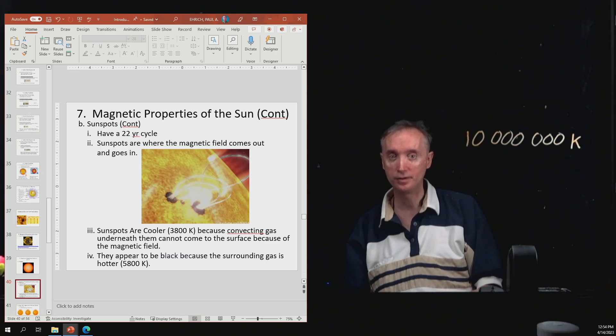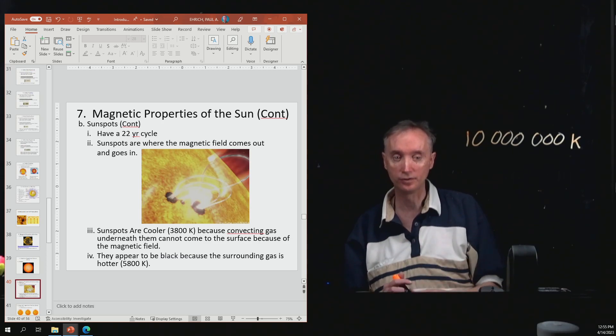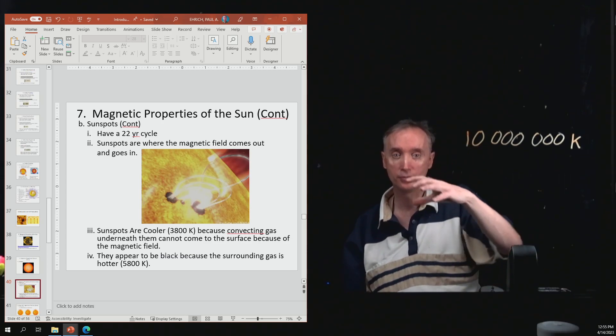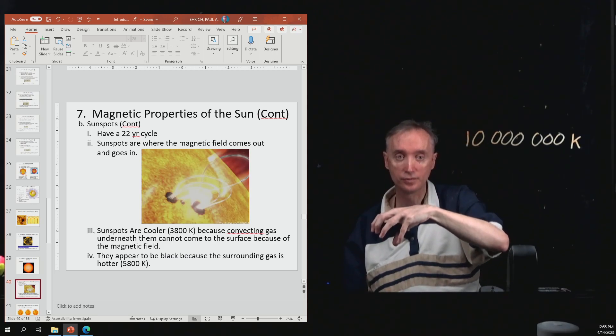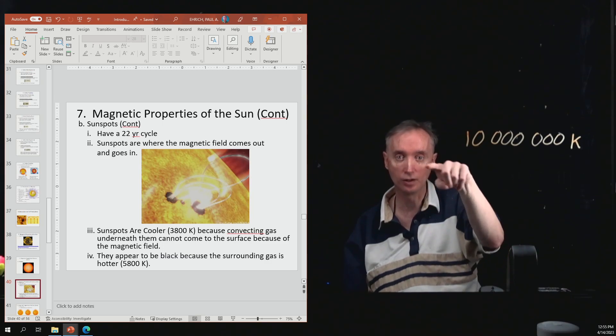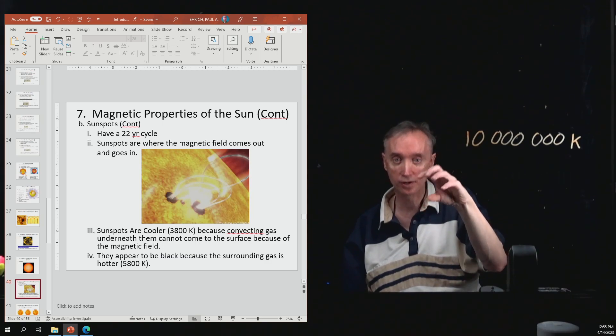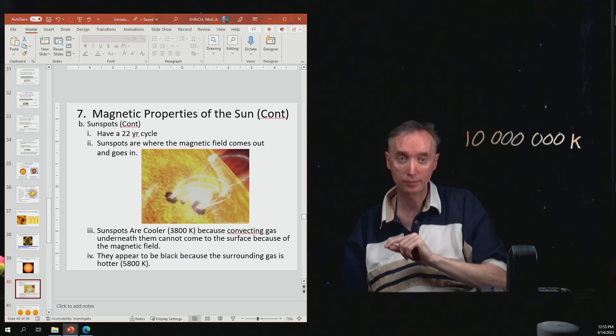So a sunspot is going to be where magnetism is coming out and then where magnetism is going into the Sun. Okay. They are actually cooler than the surrounding yellow part. Okay. That's because the magnetic field that is coming out and then going in, it's holding the heat inside the Sun. So the heat can get out at the yellow parts and so they're going to be hotter than at the black parts.